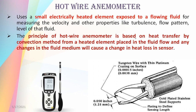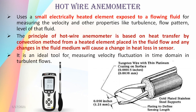The principle of the hot wire anemometer is based on heat transfer by convection method from a heated element which is placed in the fluid flow. Any changes in the fluid medium will cause a change in heat loss from the sensor. The heated element is placed in the flow, and the flow pattern and velocity cause heat to be transferred by the convection method. It is an ideal tool for measuring velocity fluctuations in the time domain in turbulent flows.